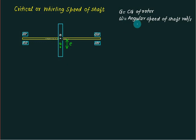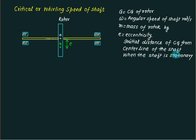G is the center of rotor, omega is the angular speed of the shaft. M is the mass of this rotor and E is the eccentricity. It is the initial distance of CG from the center of the shaft when the shaft is stationary.